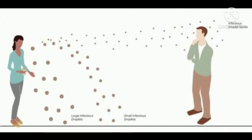Have you all seen people spitting on the roadside? It is very dangerous because there are a lot of germs in the spit. The germs get scattered here and there and we can get affected. When we cough, spit, or sneeze, the germs enter the air with tiny droplets of saliva or spit.